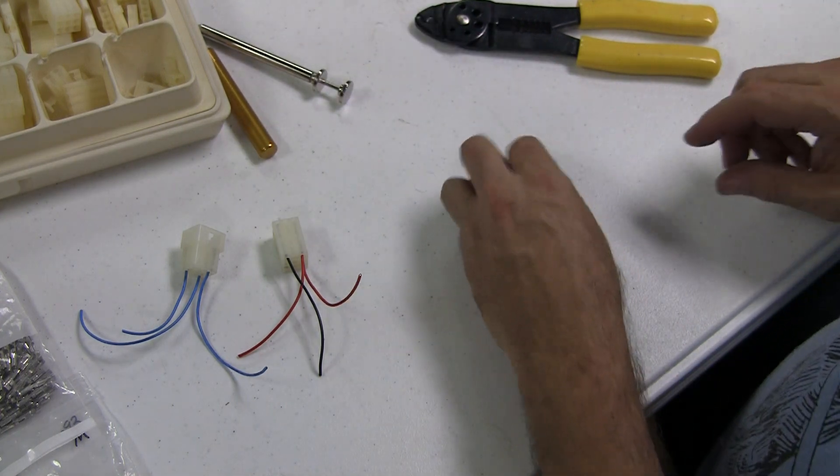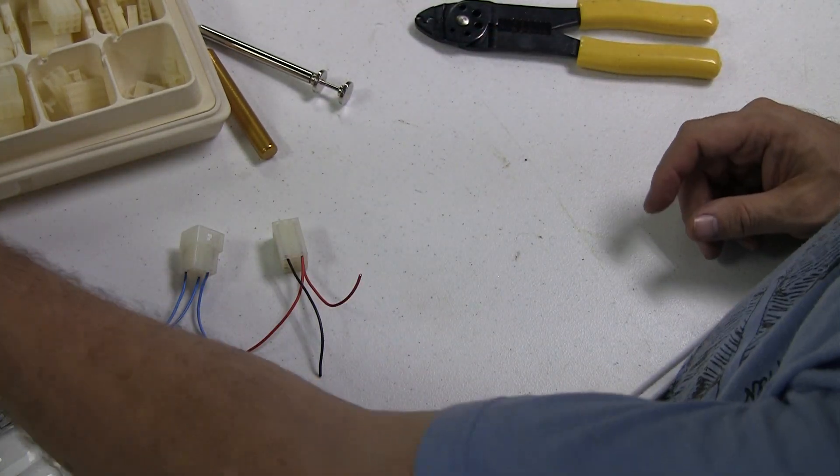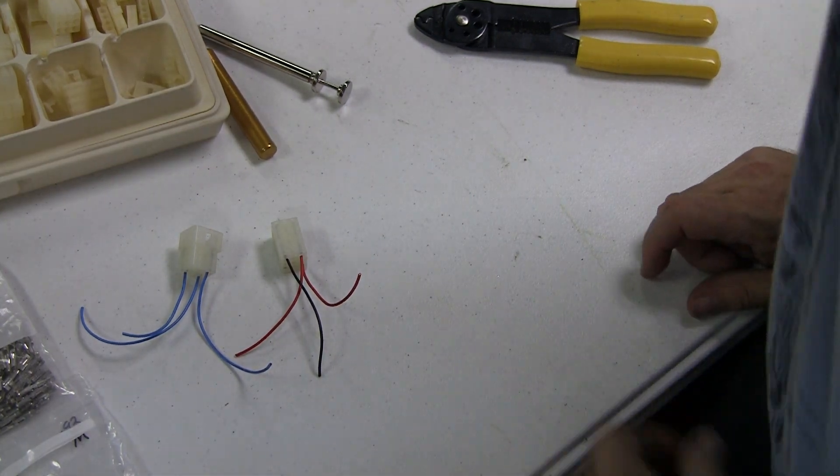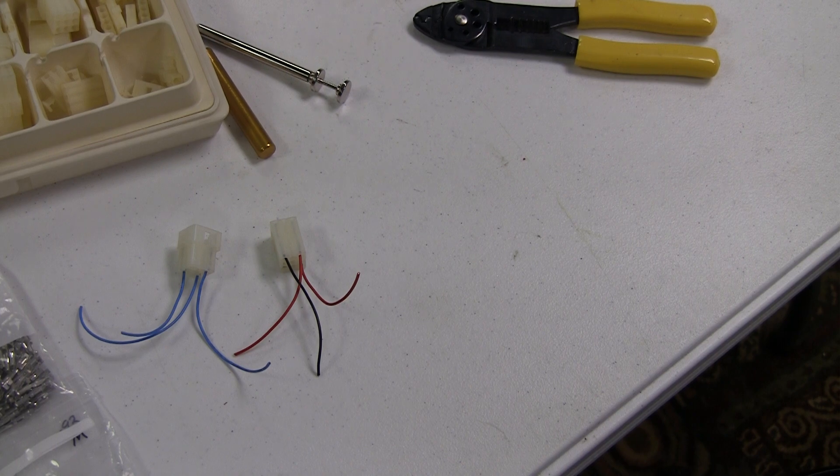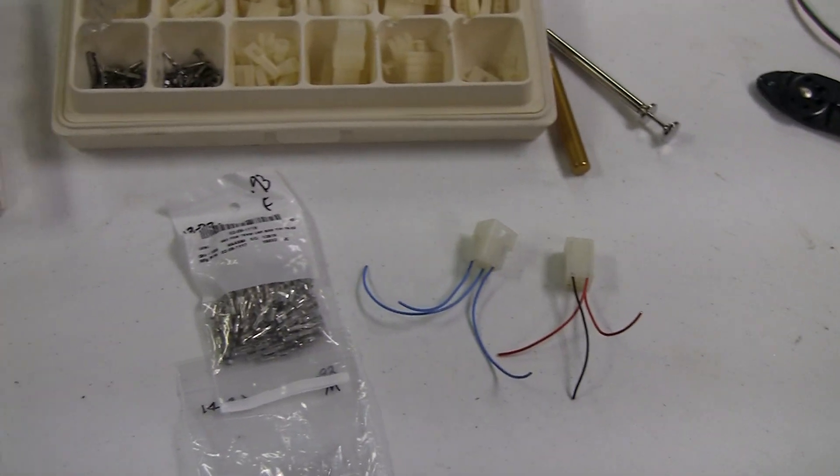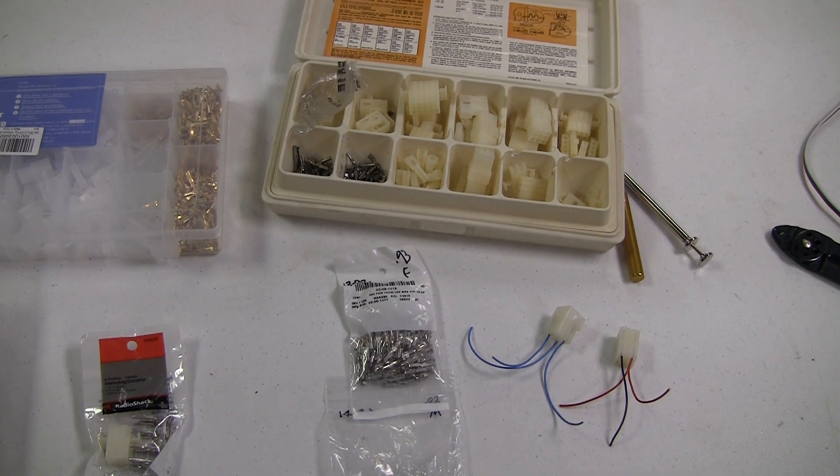So there you go. This is the 0.093 of an inch connector, which is the more common one. And that will help you fix some very common problems in some of these machines. A lot of times the connectors get all messed up, or you just want to rebuild everything. So there you have it.